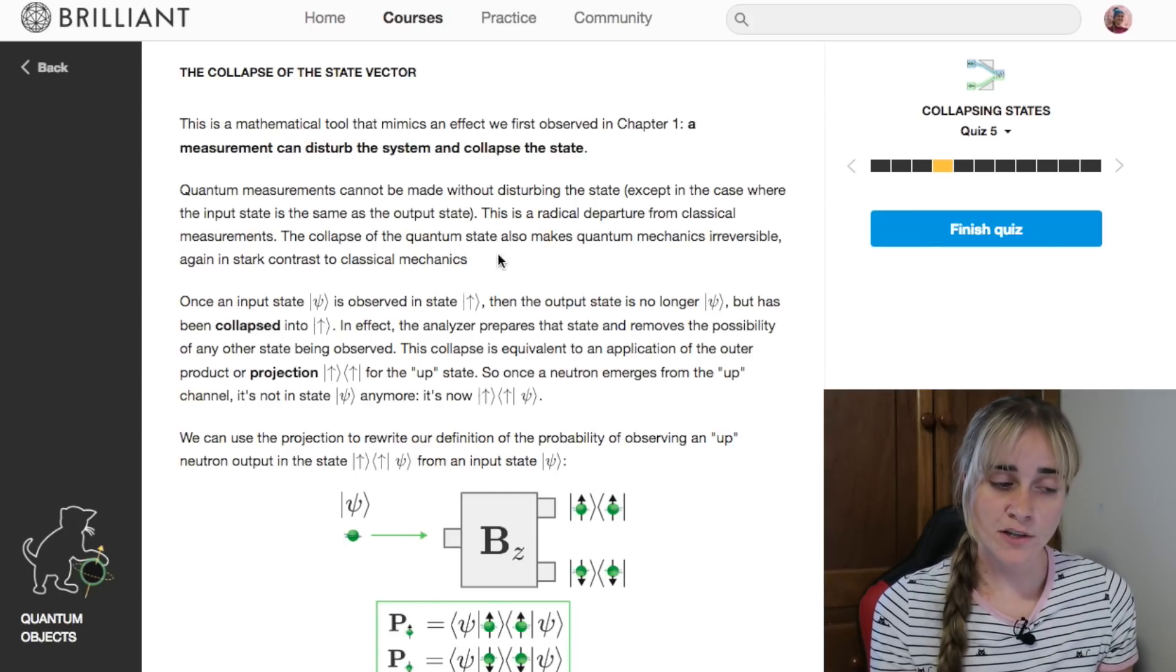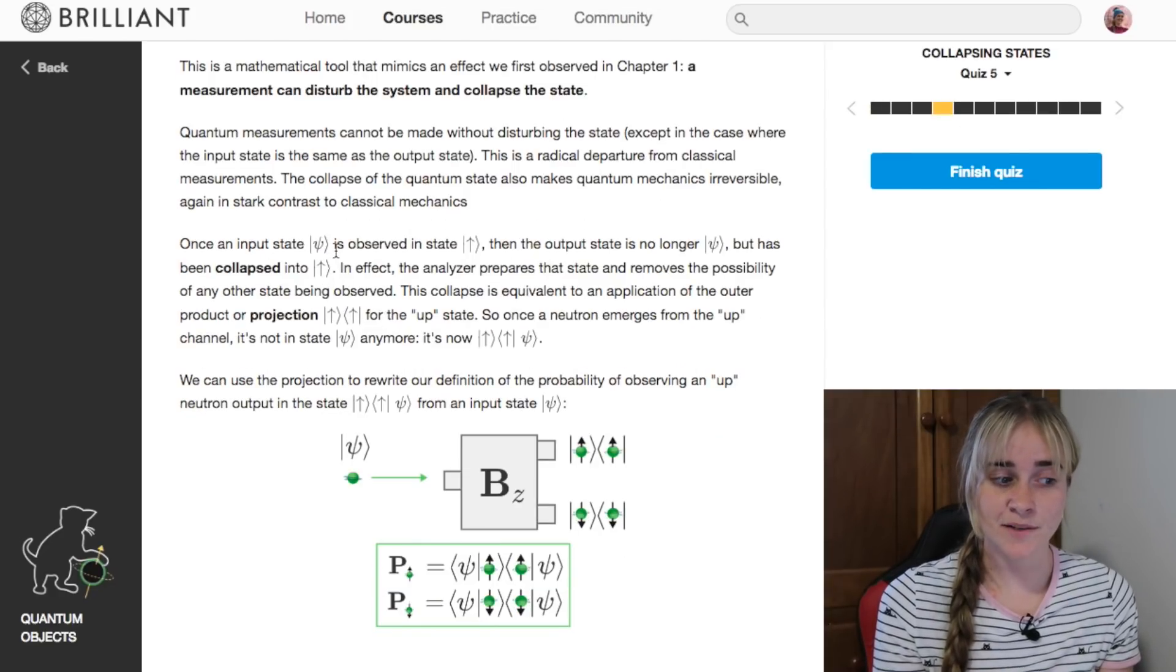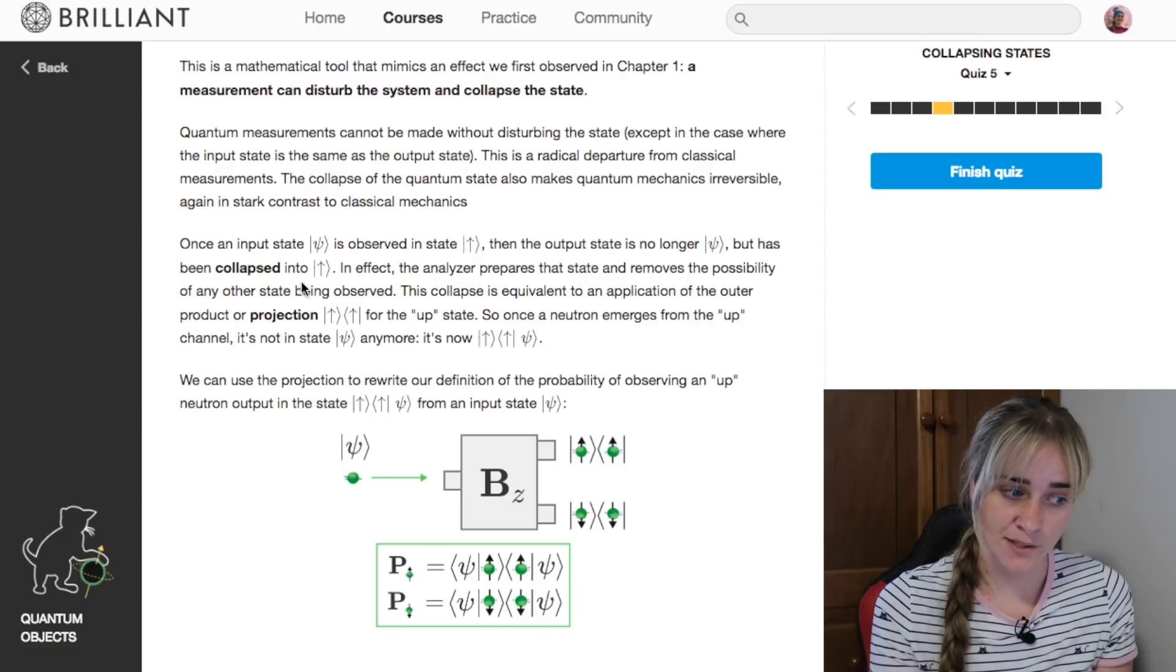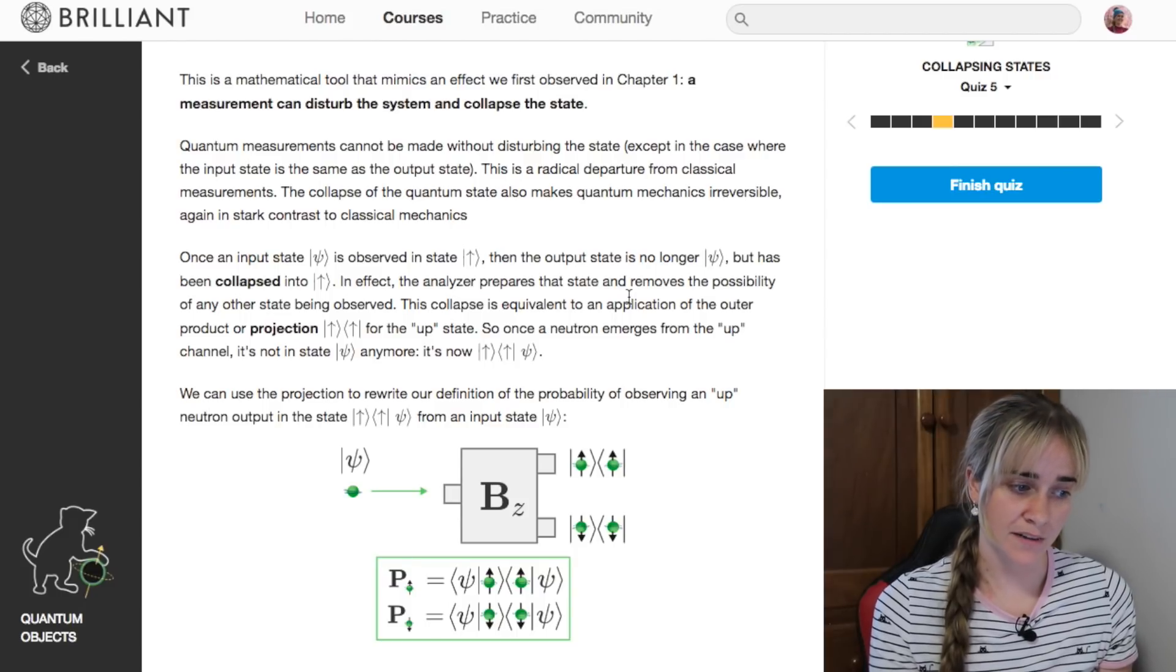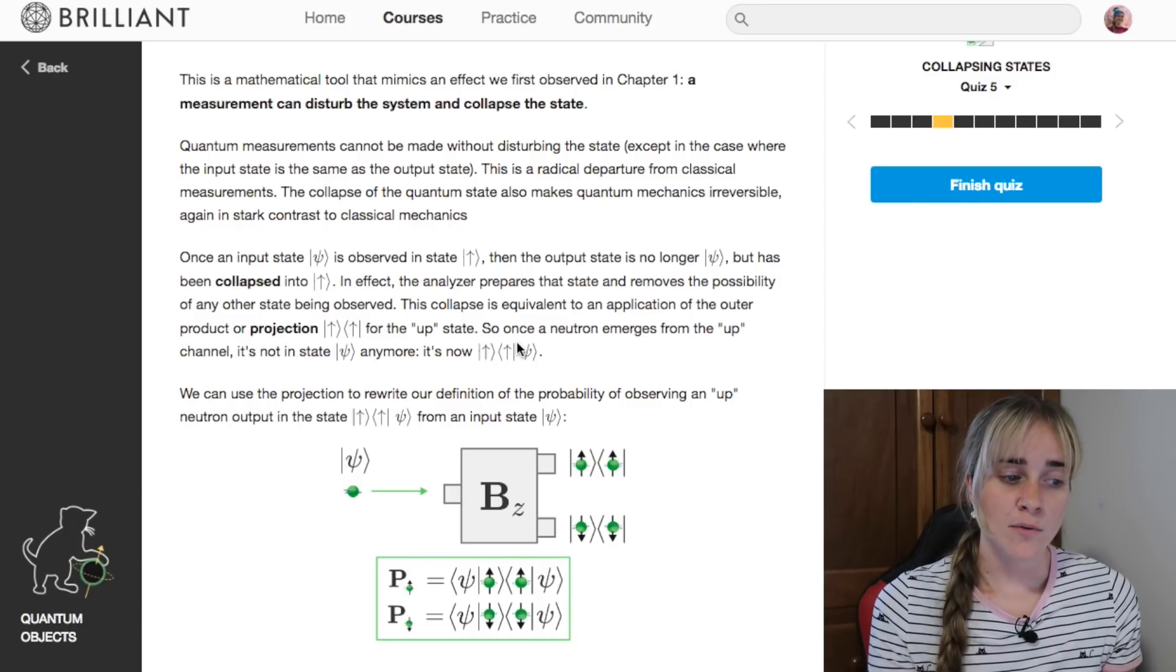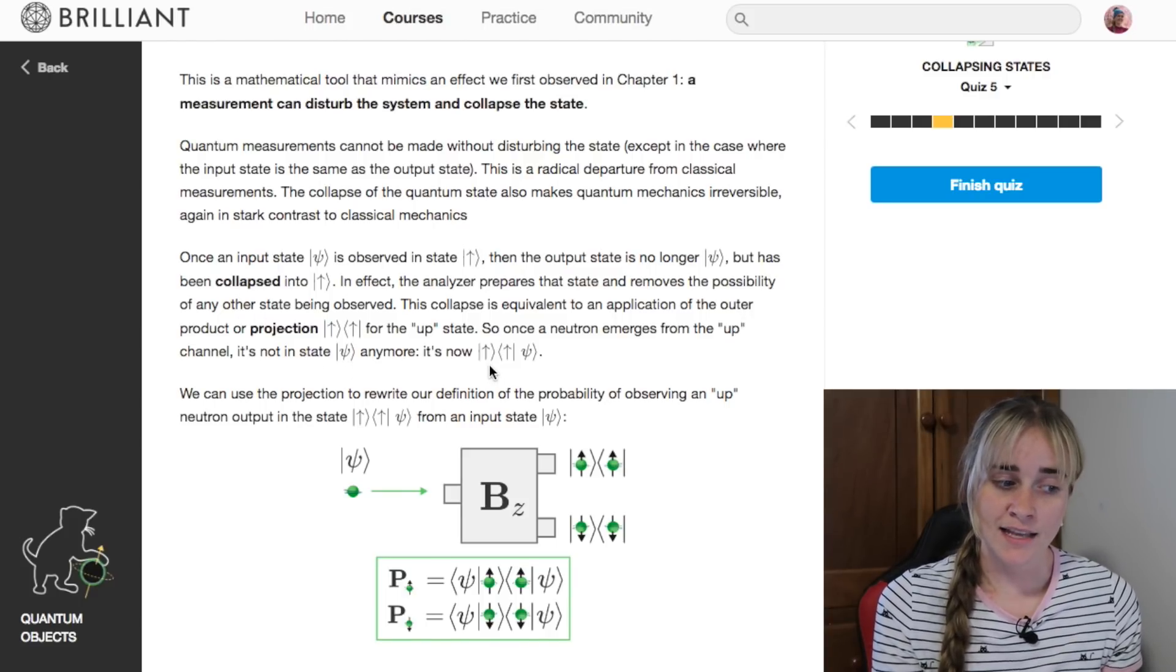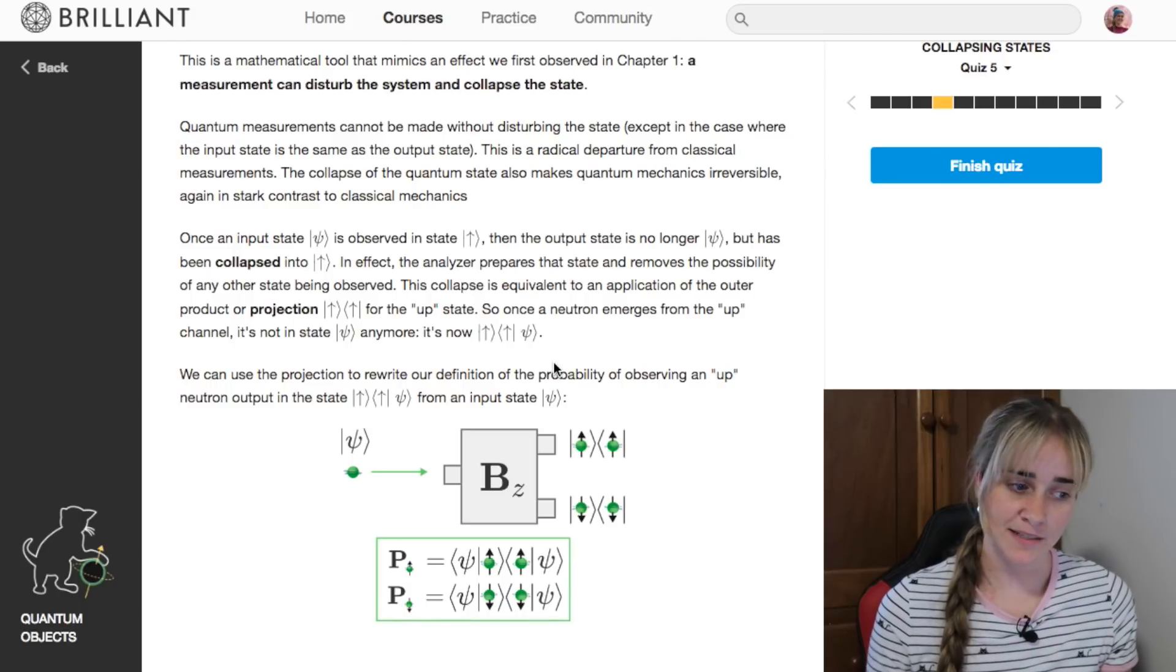This is a radical departure from classical measurements. The collapse of a quantum state also makes quantum mechanics irreversible. Once an input state psi is observed in state spin up, then the output state is no longer psi but has been collapsed into spin up. In effect, the analyzer prepares that state and removes the possibility of any other state being observed. This collapse is equivalent to an application of the outer product or projection spin up spin up for the up state.